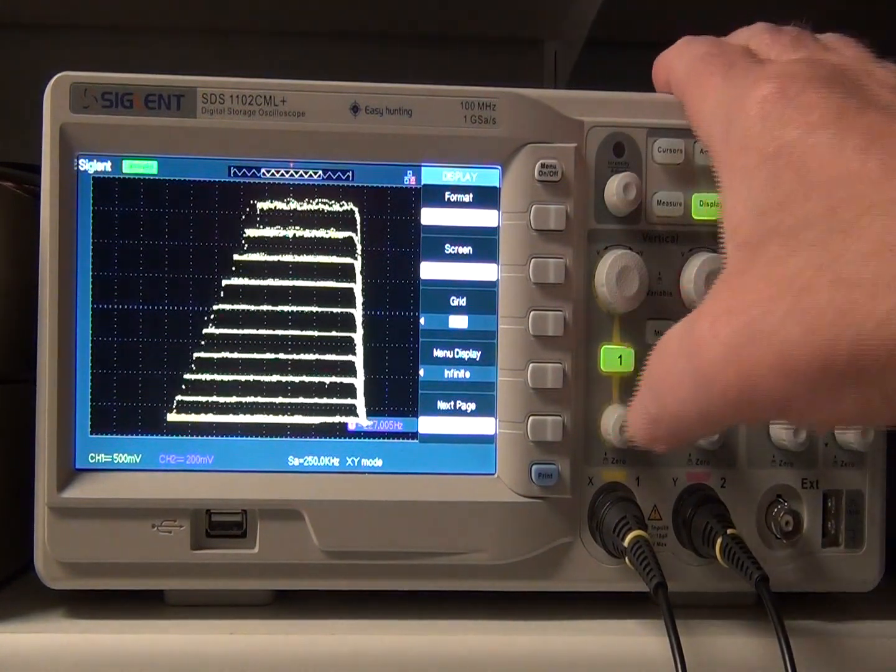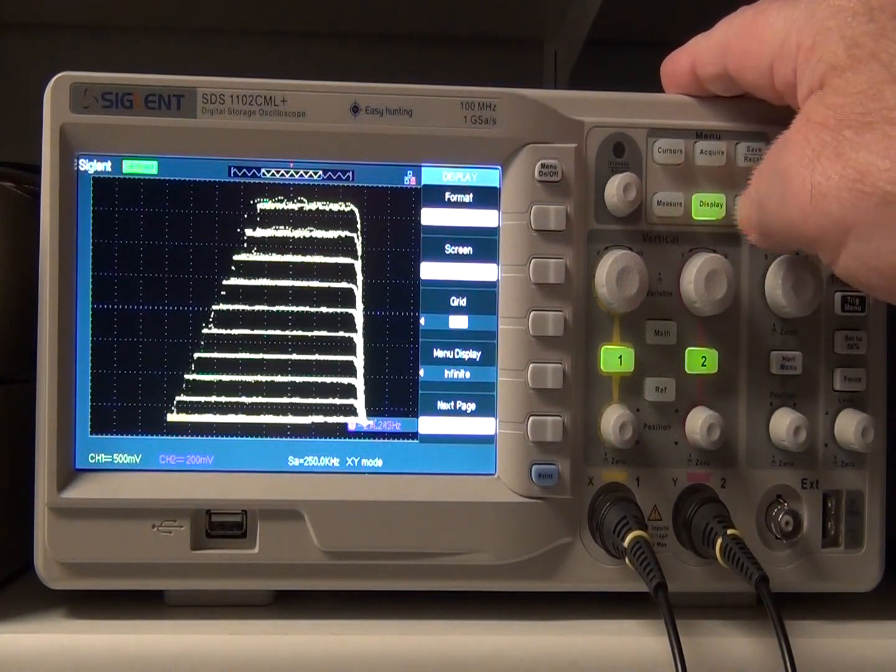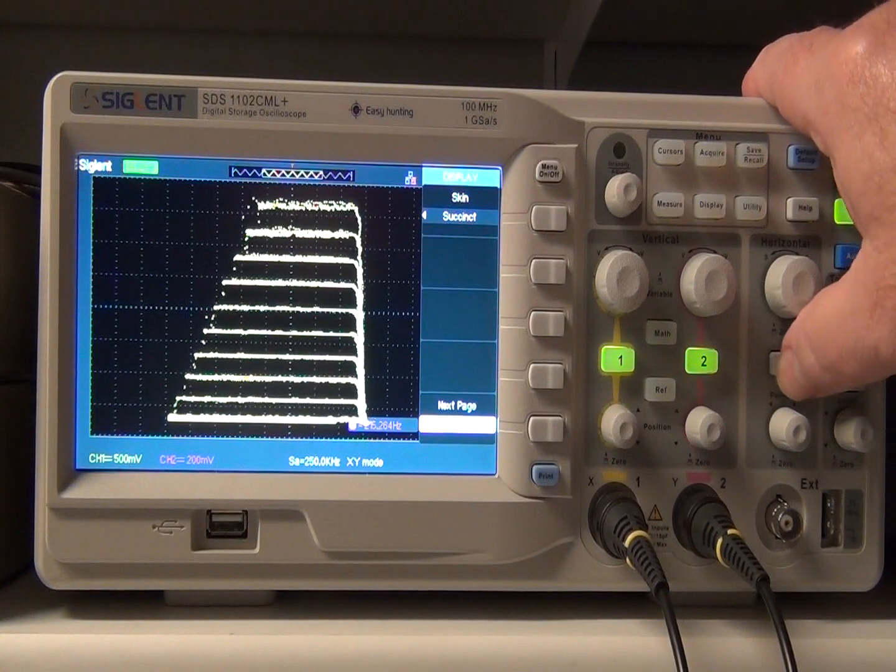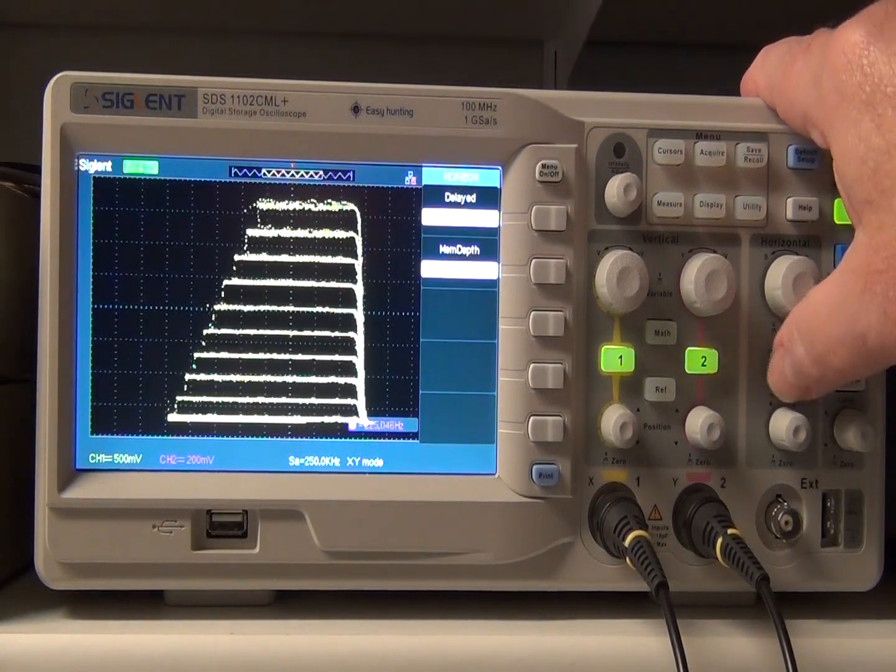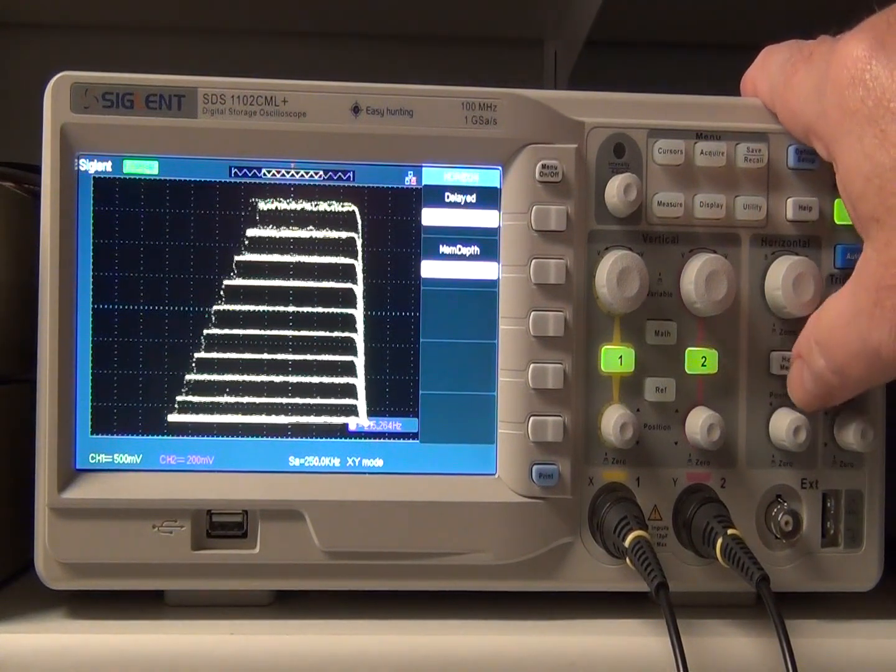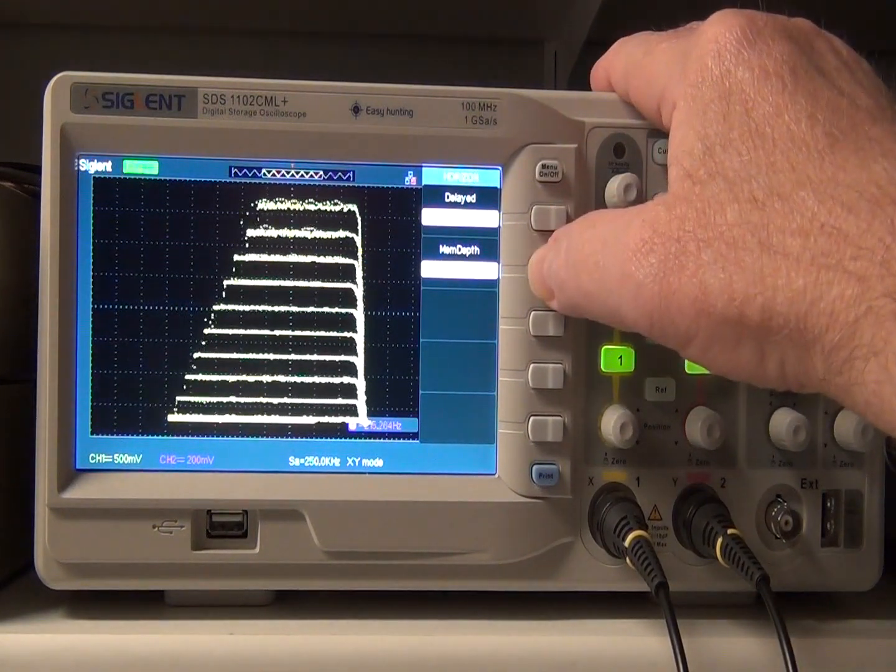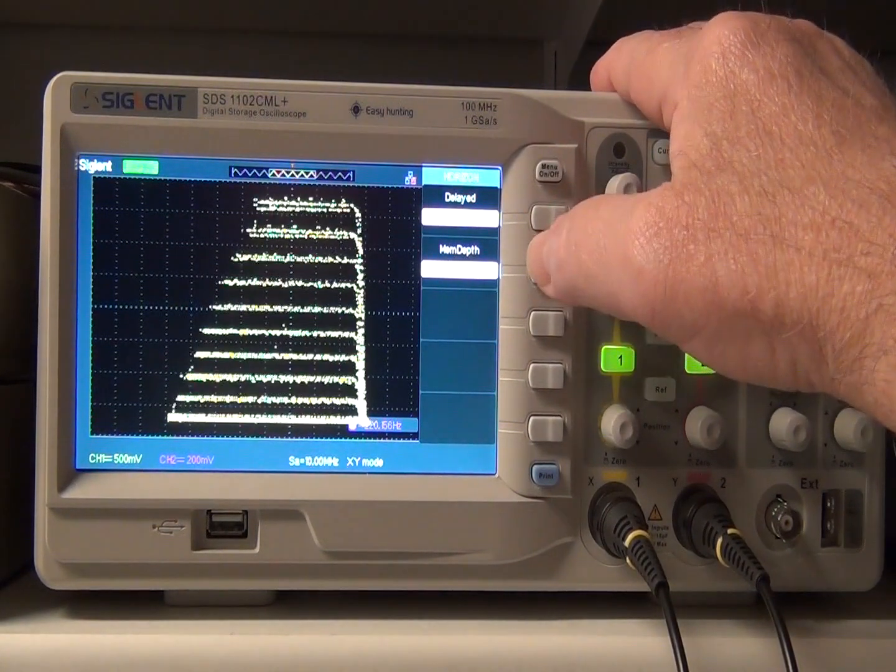Then you can play around with some filtering. Also there's a possibility for, let's see, go to horizontal, find it. So you can increase the memory depth. If you press the horizontal menu, you can get more selection.